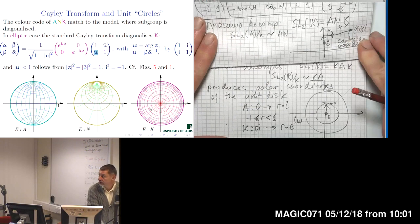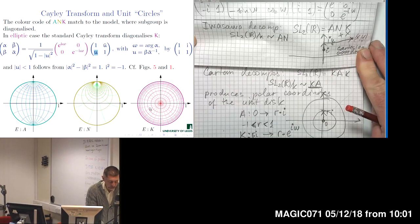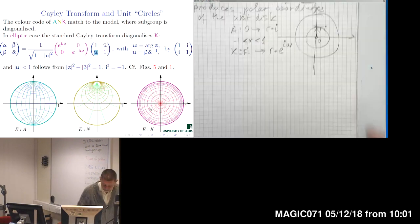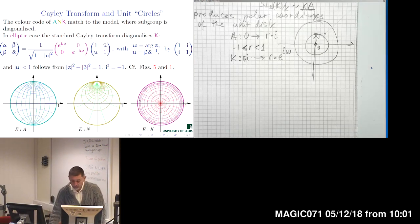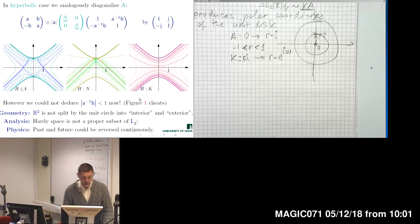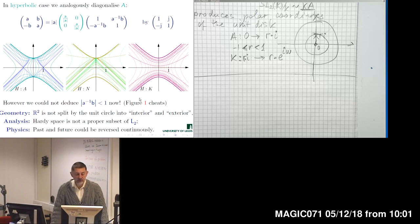The Iwasawa decomposition and the Cartan decomposition come from familiar Cartesian and polar coordinates in complex analysis. This concludes our consideration of the unit disk in the complex case. What can we do in other situations? As usual in our course, the situation is technically identical if we replace the complex imaginary unit by dual or double numbers.